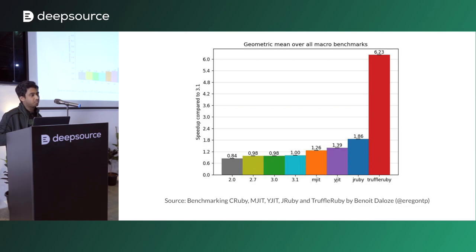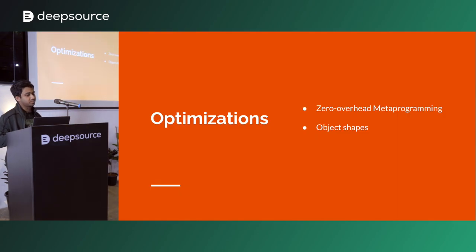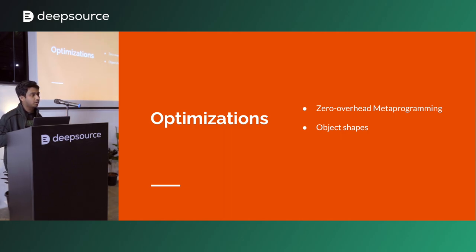Why would you run Ruby on JVM? Well, 3 billion devices run Java, so that's why you might need to. GraalVM does a lot of optimizations. Two of the most impactful ones are zero overhead metaprogramming and the recent one called object shapes. Both of these are super important, and we'll see them in a while.